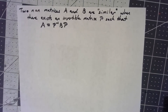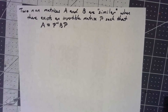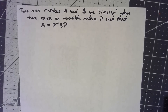A concept that comes up every once in a while is the idea of two matrices being similar. Two matrices are similar when you have an invertible matrix P such that one matrix is P inverse times the other matrix times P. One thing to realize before we go further: this is not the same as row equivalent. Row operations are unrelated concepts.